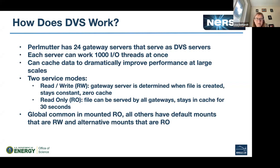Those two different mounts have two different sets of behavior. Right now at NERSC, by default, if you use the regular /global/common path you get the read-only mount for global common, and for everything else you get the read-write mount. But for these file systems we also have twin read-only mounts you can use for everything by changing the path slightly — if you want the read-only behavior, you can use a slightly different path and get that.